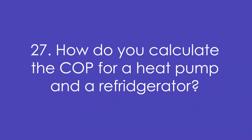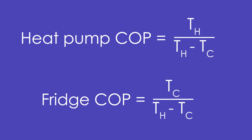Question 27: How do you calculate the coefficient of performance for a heat pump and a refrigerator? The COP is basically the reciprocal of efficiency. For a heat pump, we want hot temperatures, so COP = temperature of the hot space divided by the difference in temperatures. For a fridge, we want cold, so it's the temperature of the cold space divided by the difference in temperatures of the hot and cold space.